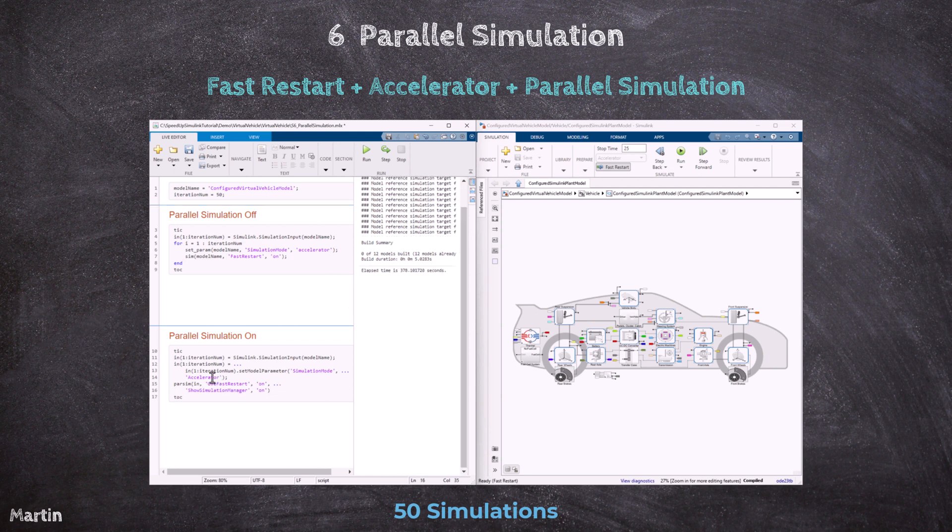Next, we enable parallel simulation by replacing the sequential for-loop with the parsim command. This distributes the 50 simulations across multiple cores. In this case, there are six CPU cores.